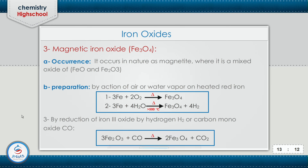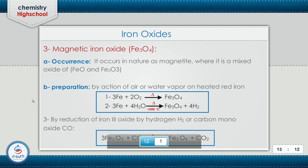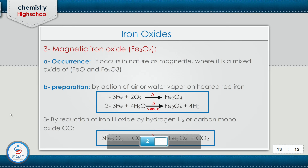Third method of preparation of magnetic iron oxide: by reduction of iron(III) oxide using hydrogen or carbon monoxide. The effect of a reducing agent like carbon monoxide or hydrogen on iron oxide in the presence of heat gives iron and magnetic iron oxide Fe3O4 plus CO2.